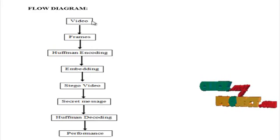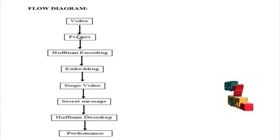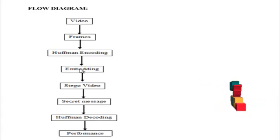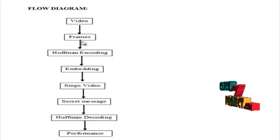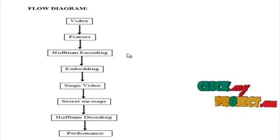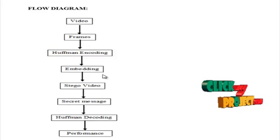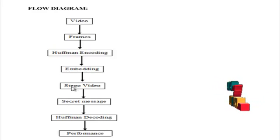First, the input video is loaded and converted into frames. After converting into frames, the encryption process is employed based on codeword substitution. After that, Huffman encoding is employed which is used for embedding the secret information inside the bits. As a result of these processes, the secret information is placed in the encrypted video frames and the resulting Stego video is obtained.